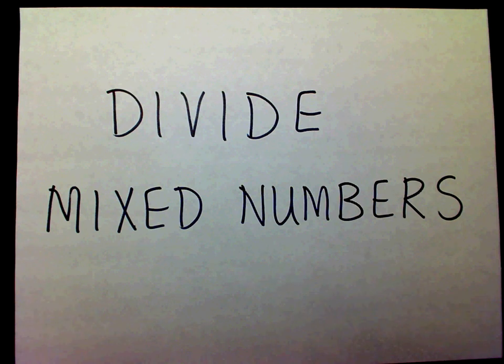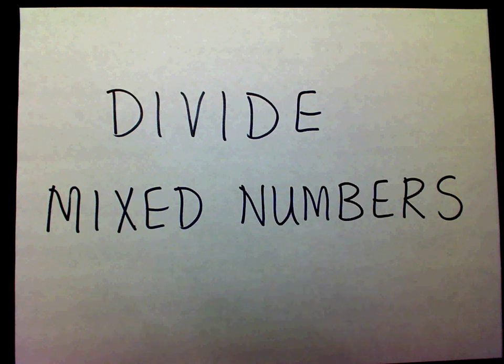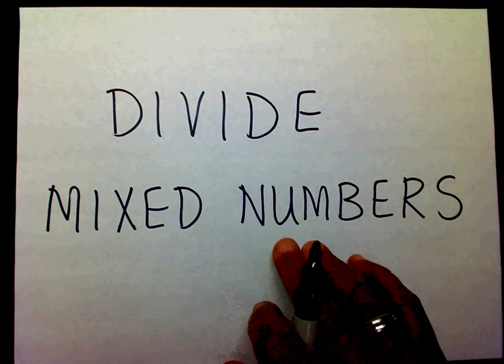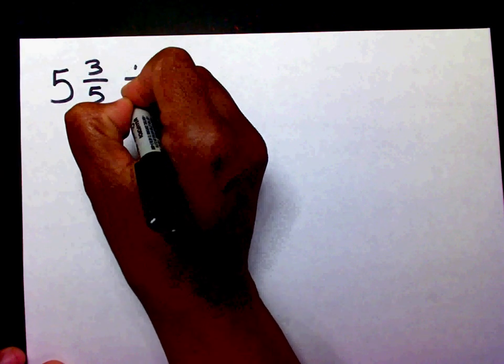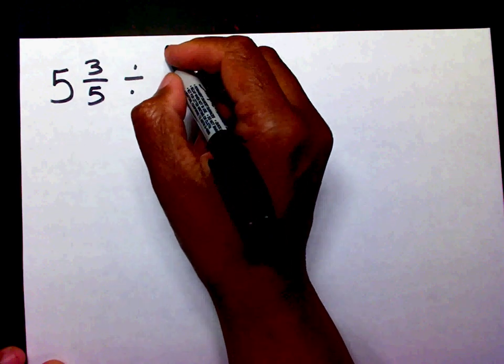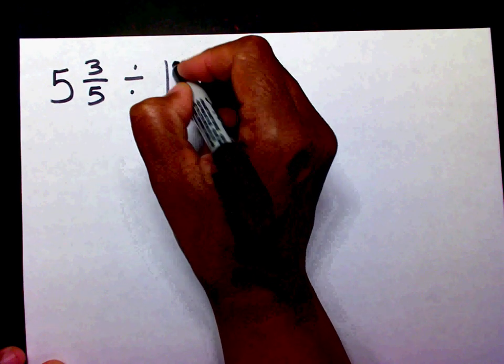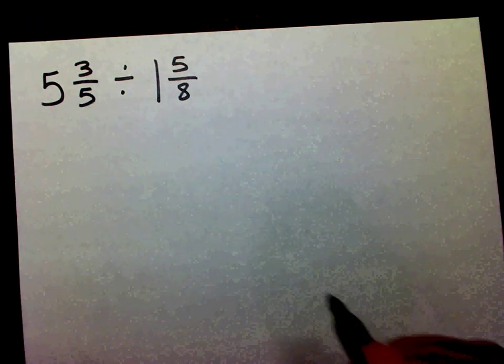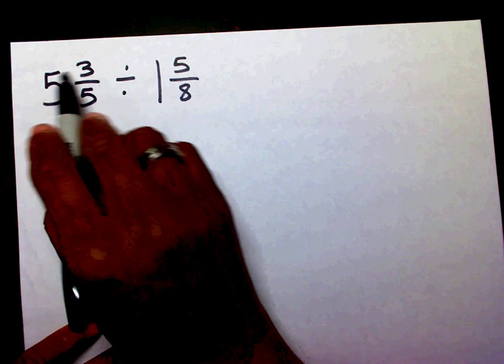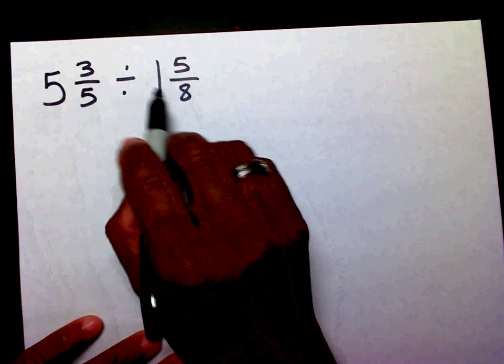Today we're going to divide mixed numbers. Let's get started. Five and three-fifths divided by one and five-eighths. The first thing we need to do is change these mixed numbers into improper fractions.